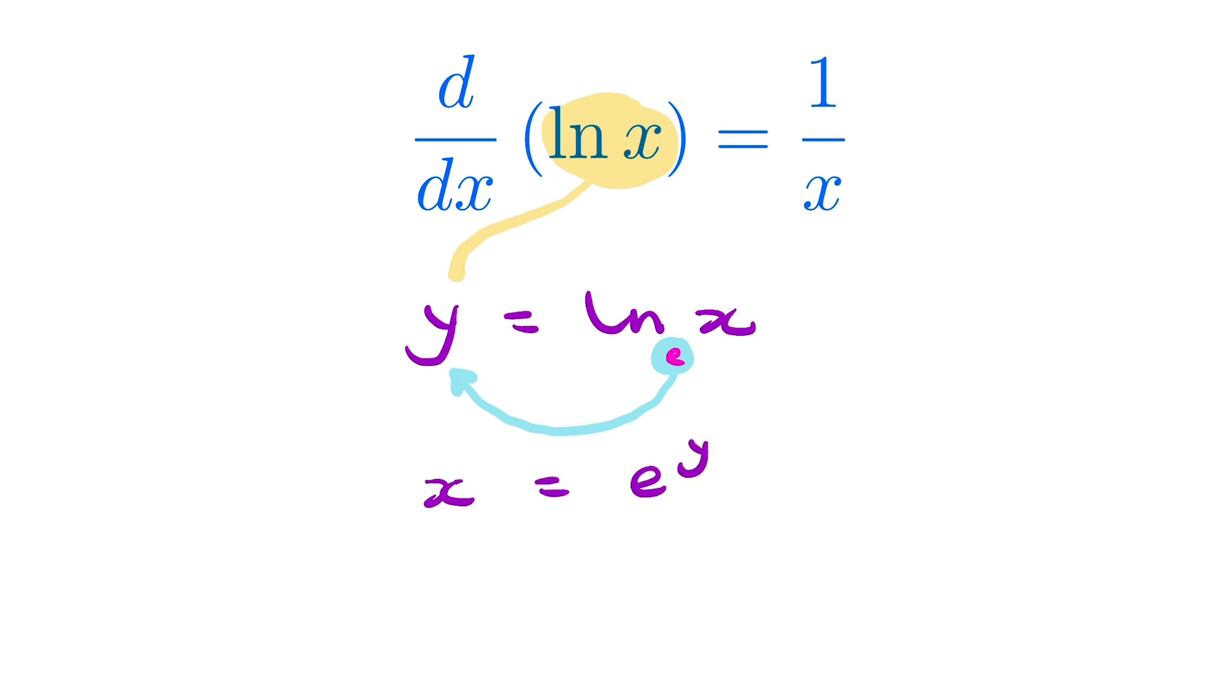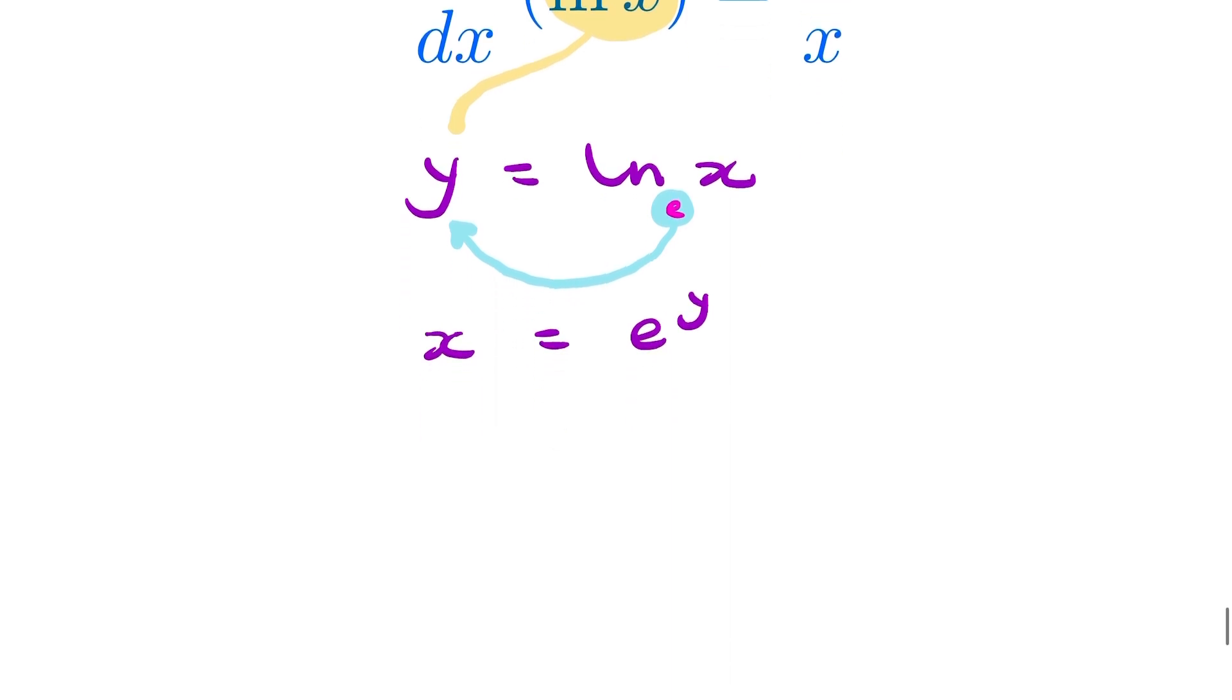And we do know how to differentiate e to the power y. So I can differentiate that to find dx by dy. That's the derivative of e to the power y with respect to y, which is just e to the power y.